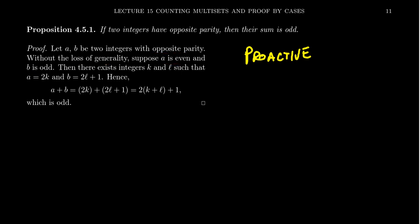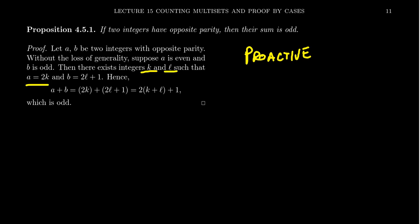Looking at the same proposition with a proactively written proof: let a and b be two integers with opposite parity. Without loss of generality, suppose a is even and b is odd. Then there exist integers k and l such that a = 2k and b = 2l + 1. Then a + b = 2k + 2l + 1 = 2(k + l) + 1, which shows that a + b is an odd number. The argument structure is the same; only the communication of similar cases differs.